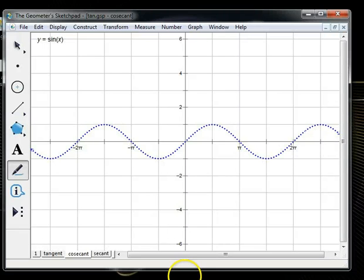In this screencast, we're going to learn how to draw the cosecant and secant functions. Cosecant is reciprocal of sine, so whenever I want to draw a function involving cosecant, I'm first going to draw the sine function.